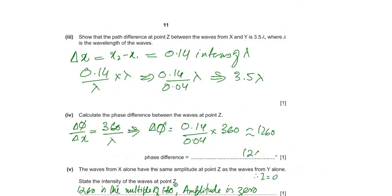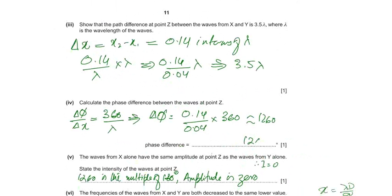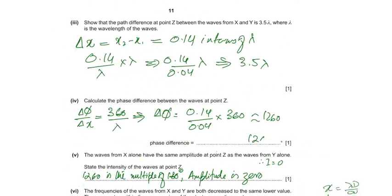Calculate the phase difference between the waves at point Z. The equation is delta phi over delta X, 360 over lambda. Delta phi, 0.14 is the delta X with its wavelength 0.04 times 360, we will get 1260, which is 1260 degree.